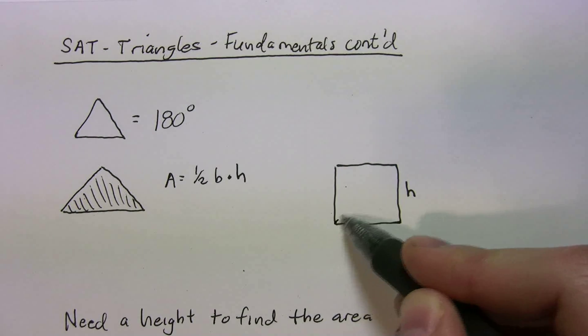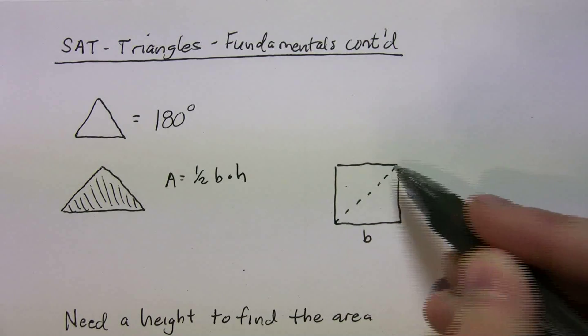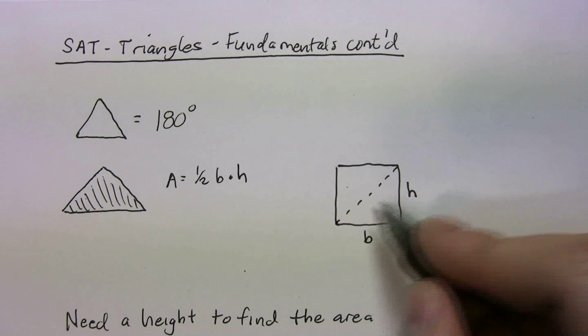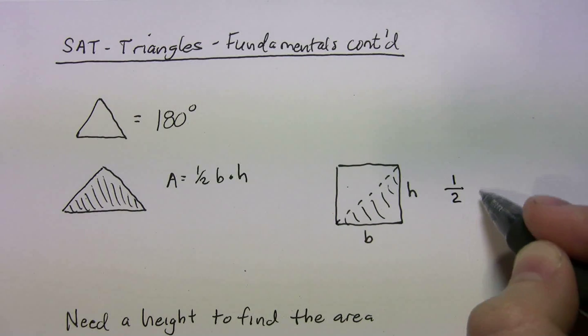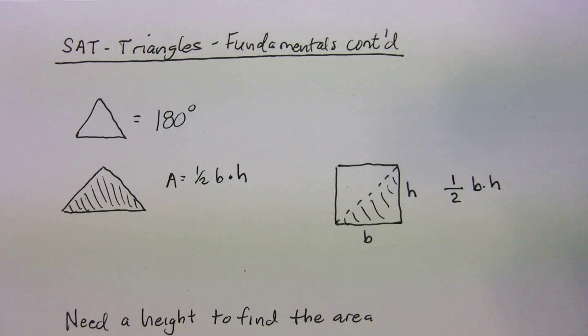Now, if I split that square in half along the diagonal, what do I get? Where's the area of this shape right here? It's going to be one half base times height. It's just half the area of the square. So if you ever forget the area of a triangle, that's one way to remember. Nice little, I don't know, different way to think about it.